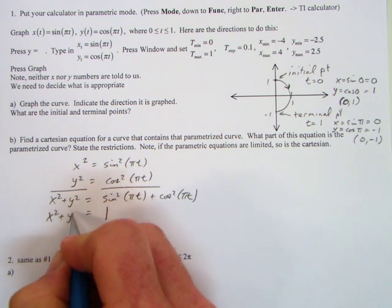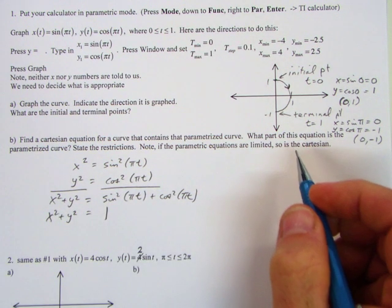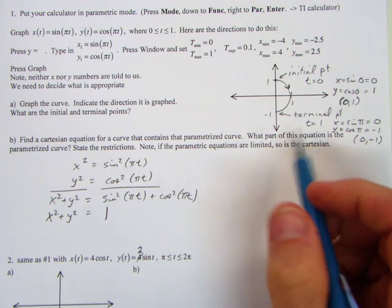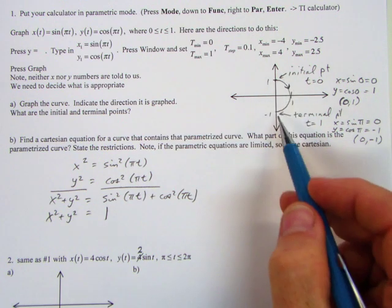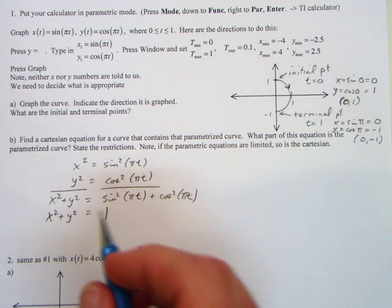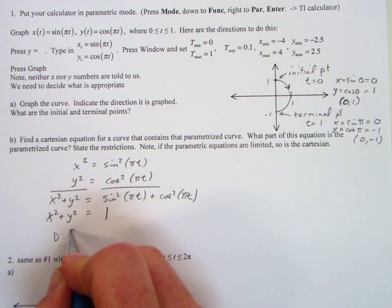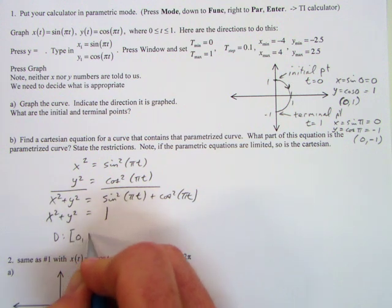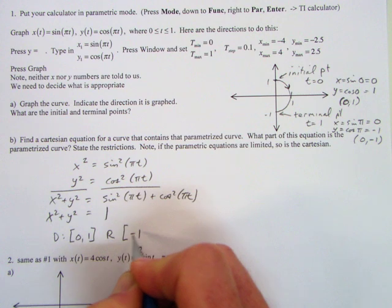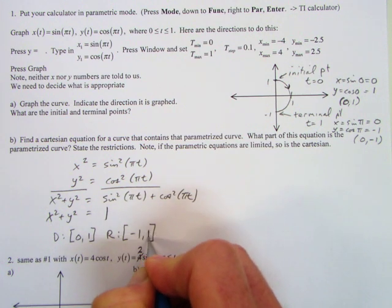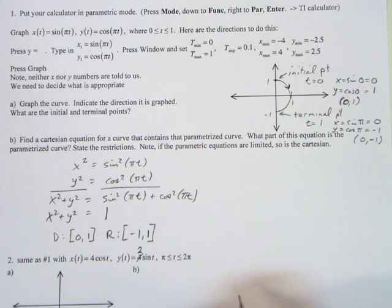And we know sine squared plus cosine squared of an angle theta is 1. So this equation is actually x² + y² = 1, but we know it's not the whole circle, it's only the half. So what is the domain of the x values? What are the x values here? Zero to 1, and what's the range? What are our y values? Negative 1 to 1. So we're going to state the restriction on there to make that complete.